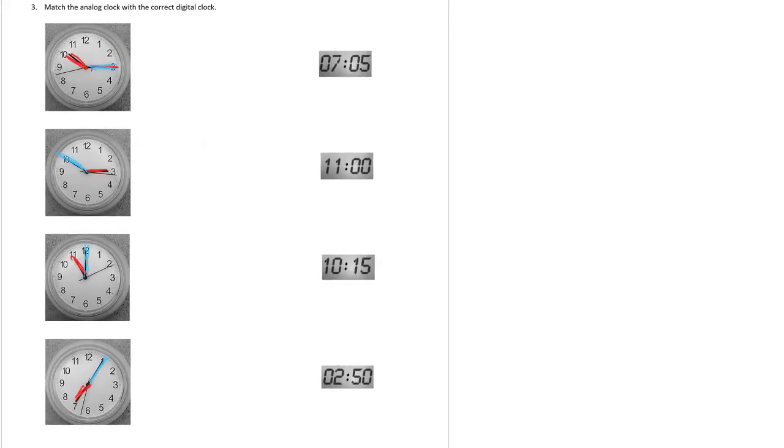And digital time, the thing to remember is the hour comes first. That's to the left of the colon—the colon's those little two dots in the middle. The hour comes first, and the minutes come second. So this would be seven hours and five minutes. We're seven o'clock and five minutes more.